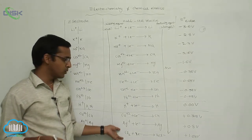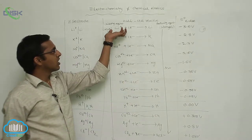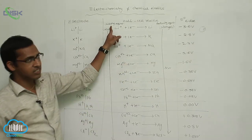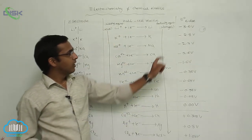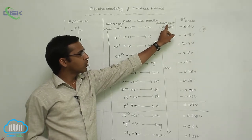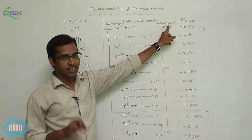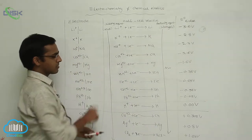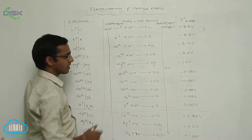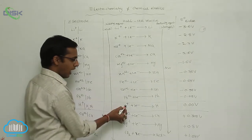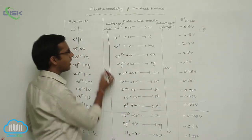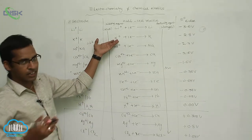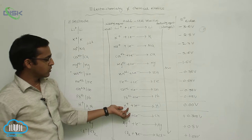Metals at the bottom of the series produce anions. From top to bottom, oxidizing nature increases and reducing nature decreases. Metals above hydrogen easily displace the hydrogen ion in acid solution — meaning top-of-series metals easily displace hydrogen.